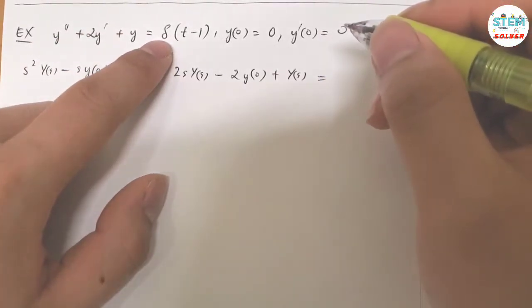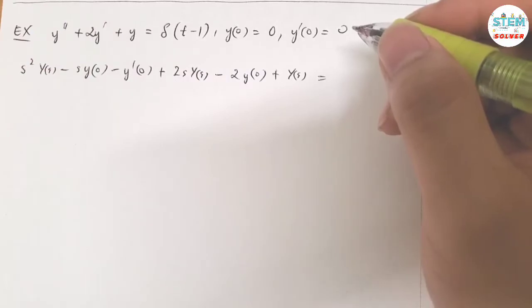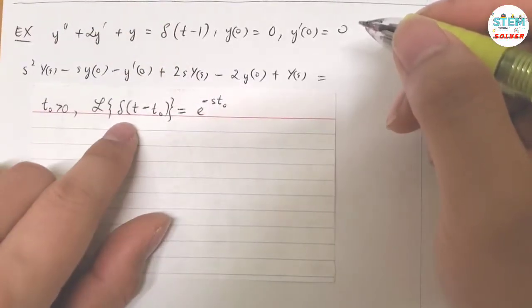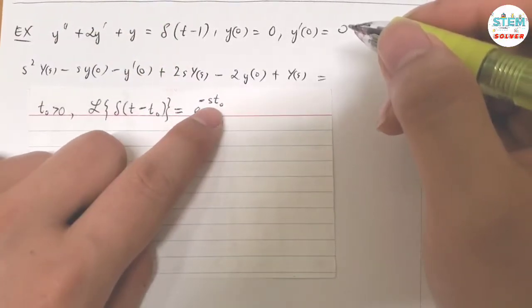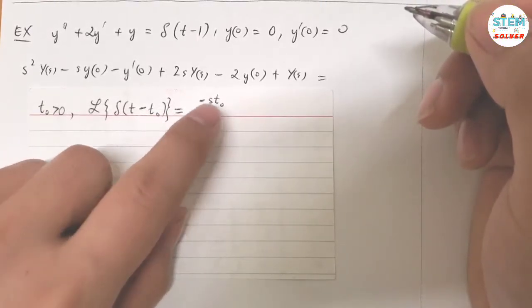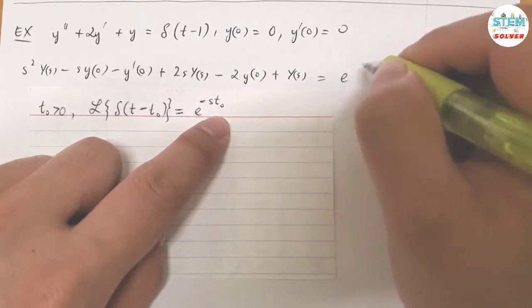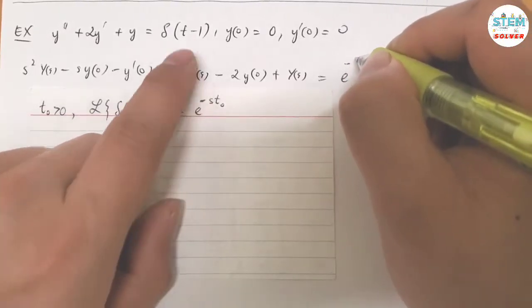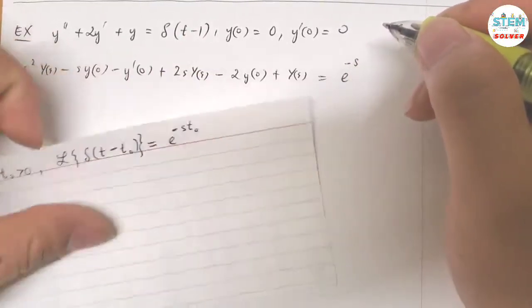This is called the direct delta function, and if you don't remember, the Laplace transform of direct delta function is equal to E to the negative S times T0, so whatever T0 here is, you just plug it in. So this can have E to the negative 1S.